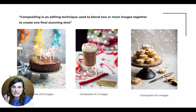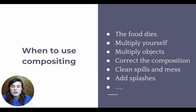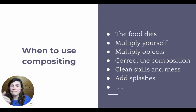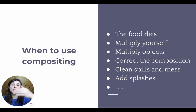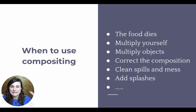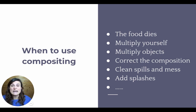So when you shoot for compositing, there are some things you need to keep in mind. When might compositing be really helpful for you? First of all, if the food dies — maybe you're asked to shoot different subjects and each of these subjects needs to look fresh. And by the time you've prepared the third or fourth subject, the first one is long dead. So you can't get every subject looking its best in one shot, but you have to shoot each subject individually and then merge them together with compositing.